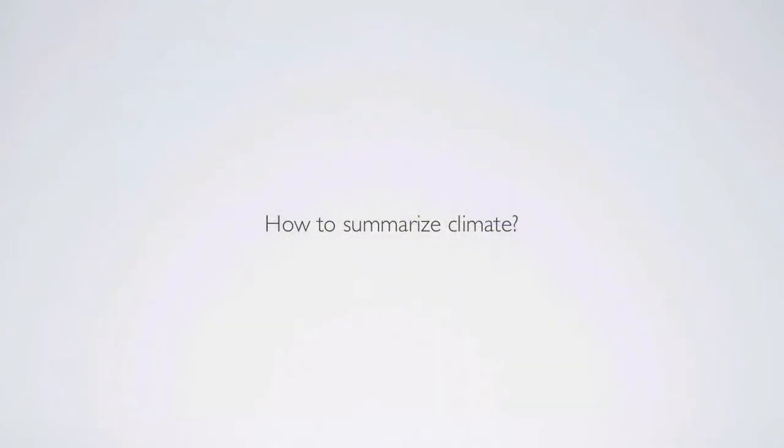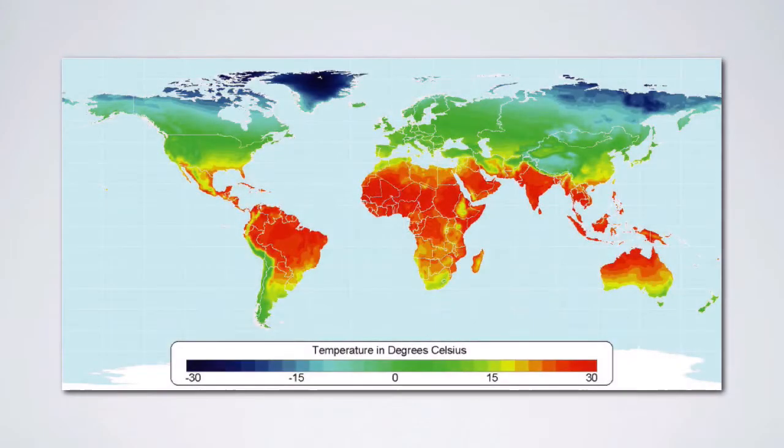So when you look at all the variation that's out there in different ecosystem types, how do we summarize climate to begin to understand what's causing these differences in ecosystems that we see in their distribution? One way to do that is just to take an average of the temperature and the precipitation that we see. And the authors have a map of the world that shows the mean annual temperature, so the average temperature here shown in degrees Celsius. The scale here is centered at zero degrees Celsius.